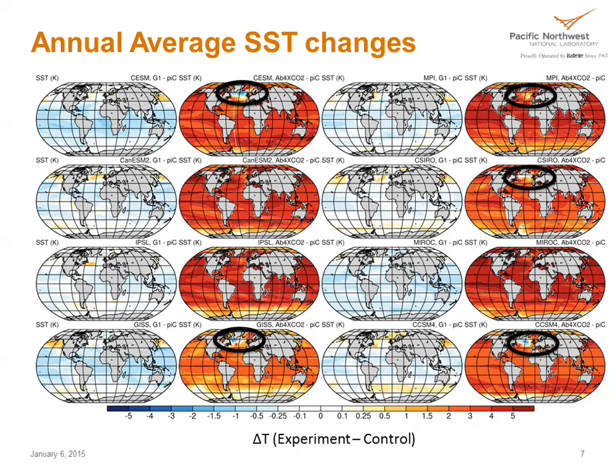There is less warming in the North Atlantic in the deep water formation area in many models. For the geoengineered models, you can see a frequent warming in the North Pacific and sometimes in the North Atlantic as well.